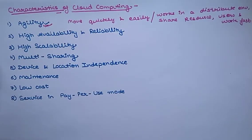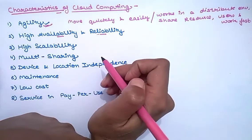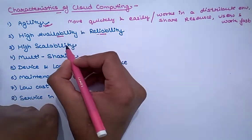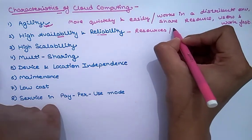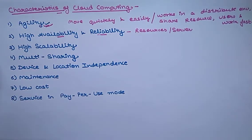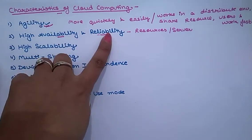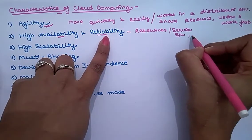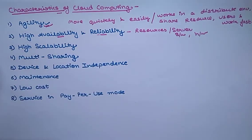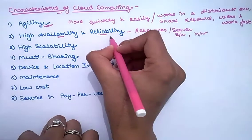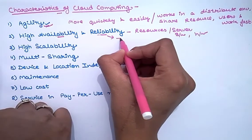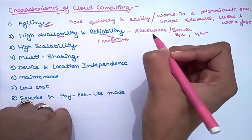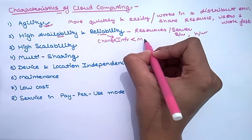The second characteristic is high availability and reliability. Here we are talking about the availability and reliability of resources, servers, or services. The availability of servers and other services like software and hardware is very high in cloud computing, and all these are very reliable because the chance of infrastructure failure is very minimum.